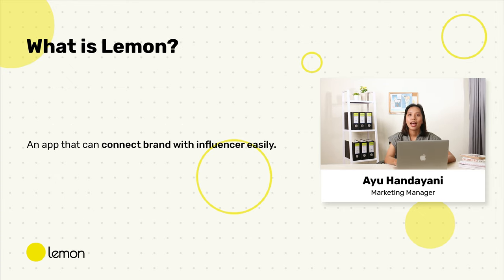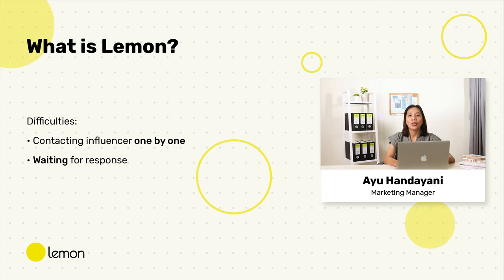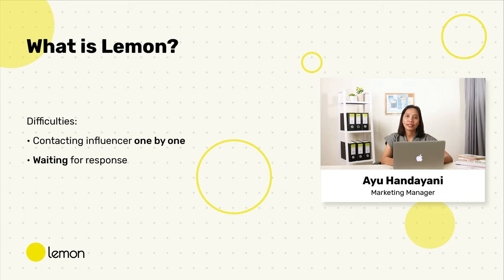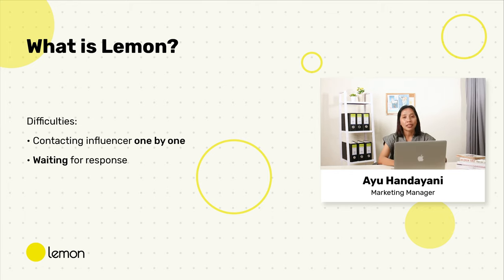Now, what is Lemon? Lemon is an app that can connect brands with influencers easily. We understand the difficulties that brands face when they need an influencer — you have to contact them one by one, wait for a response, and sometimes they write back in a couple of hours, days, or even weeks, because they are flooded with DMs and your message is somewhere in there.